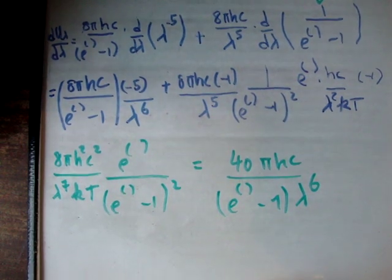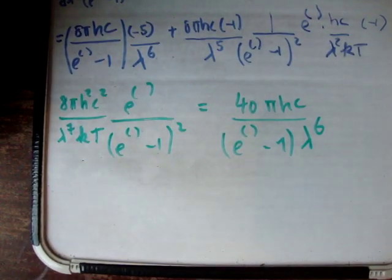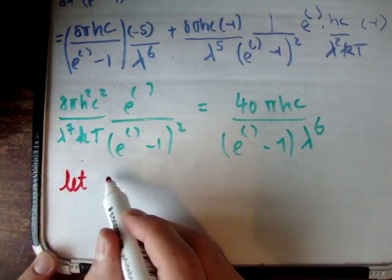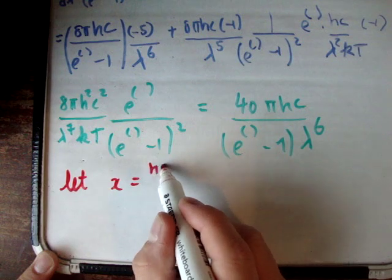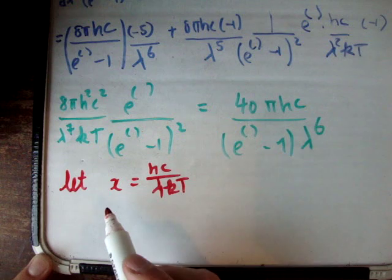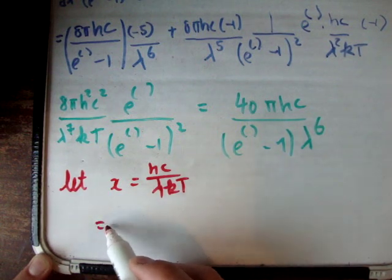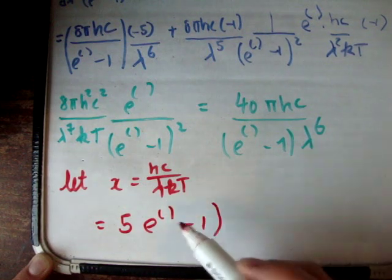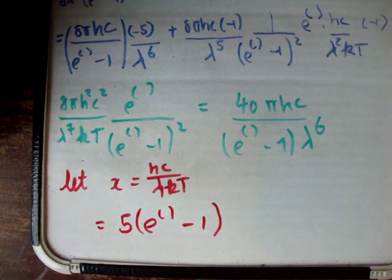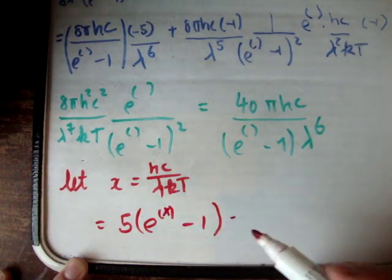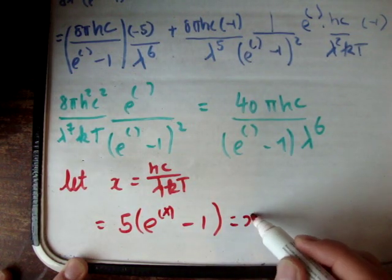The last thing we need to do here is prepare this for an Excel document. Because you don't really solve this by hand. So, if I let x equal to hc over lambda kt, you're going to get the following: that the whole thing becomes 5 times e to my exponent minus 1. And that's going to become e to the x. And that's going to be equal to x times e to the x.